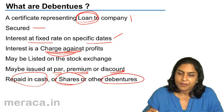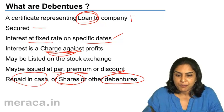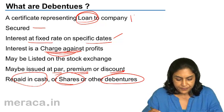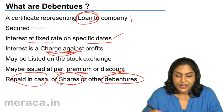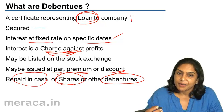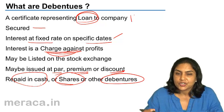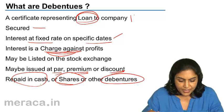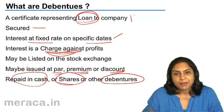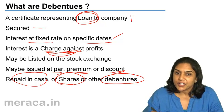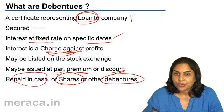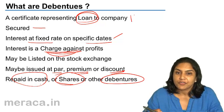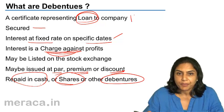Debentures may be issued at par, premium, or discount, just like in the case of shares. When debentures are redeemed, they are repaid — a debenture is a loan which normally has to be repaid after a period of time. It may be repaid in cash, or it may be converted to shares, or converted to new debentures.